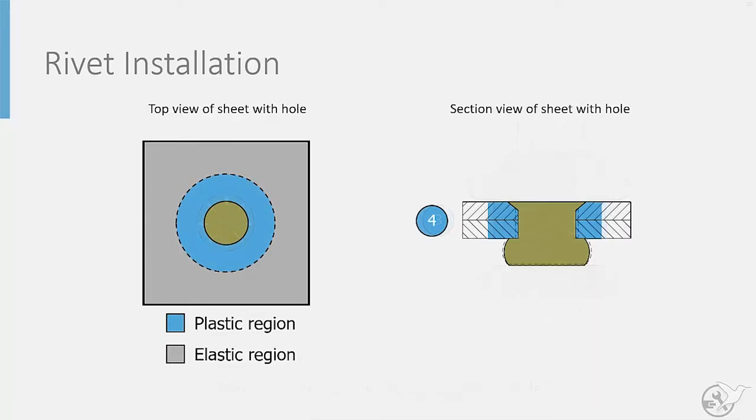In the final step, the rivet installation force is removed, and the sheet tries to relax, just like when a rubber band is unloaded and shrinks back to its original size. But due to plasticity, the blue region around the fastener hole will be larger than it originally was.